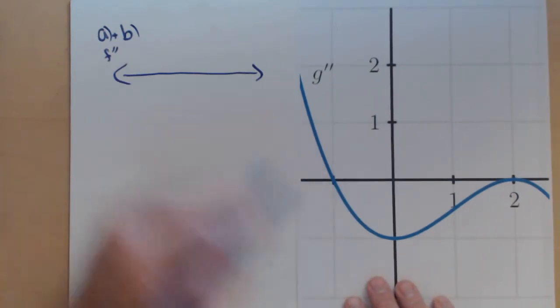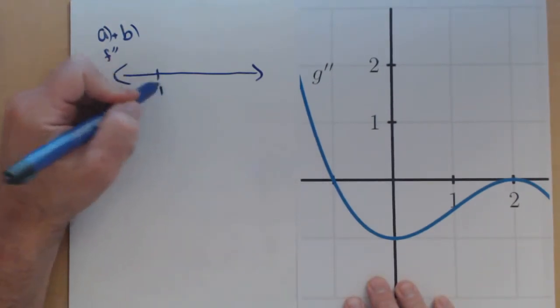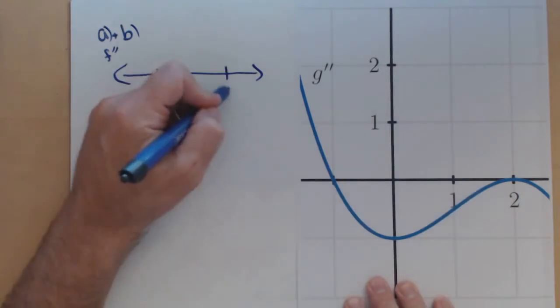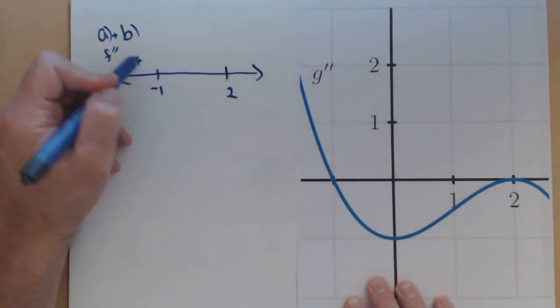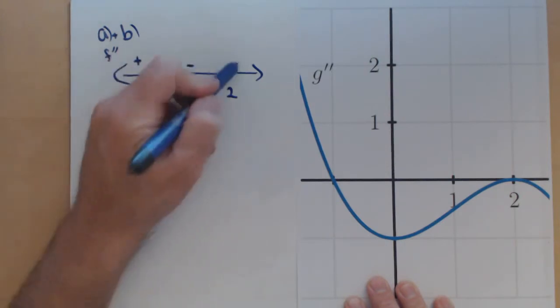Now our second derivative is 0 at negative 1 and at 2. We don't need to do test points because we can clearly see the graph. It goes plus, minus, minus.